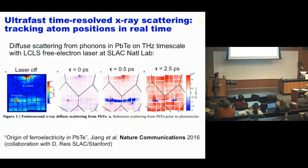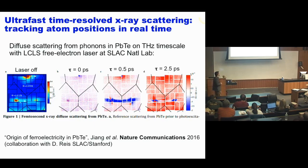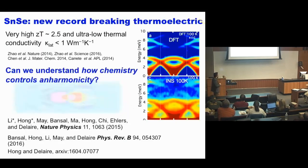More recently, we also looked in the time-resolved domain using the free electron laser at SLAC. This fascinating facility allows you to freeze atomic motions on a femtosecond time scale and track them in time. We can take pictures at certain times after pumping the system with an ultra-fast laser to see the distribution of scattering intensity, helping us understand the bonding in this material.